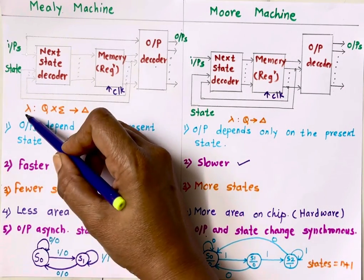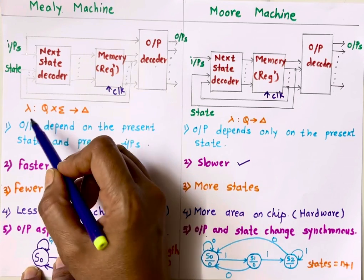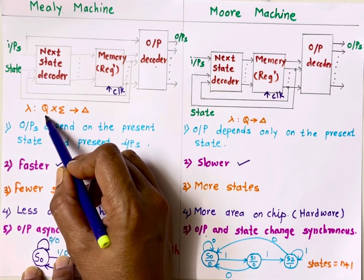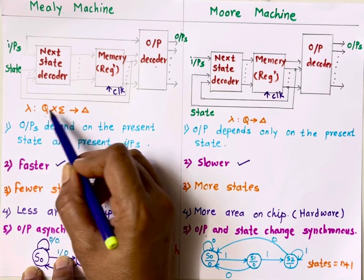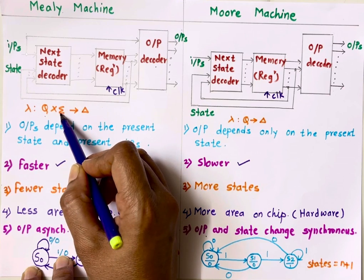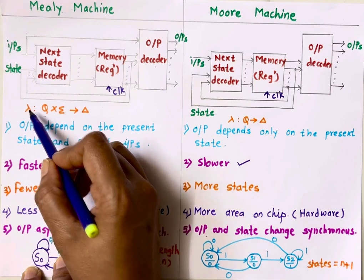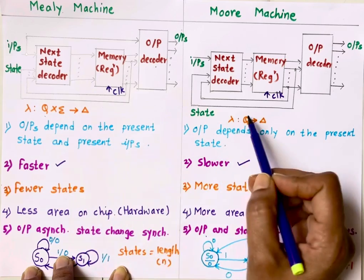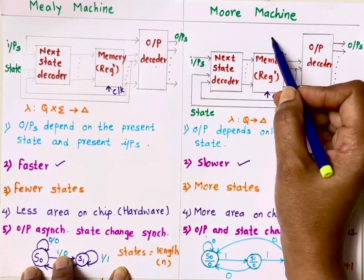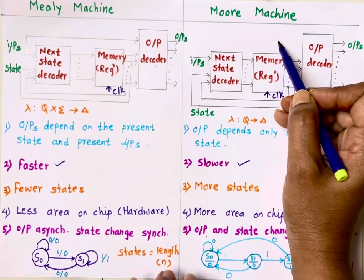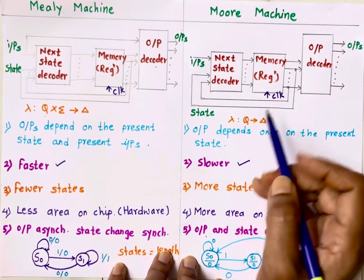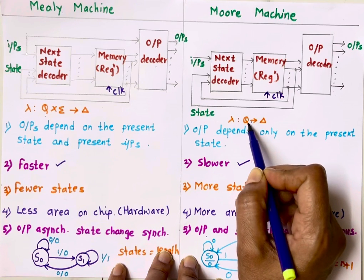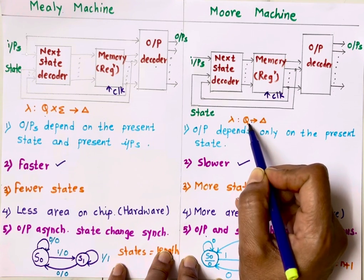Lambda is the output function. In a Mealy machine, output depends on present state Q as well as present input, so output is a function of both present state and present input. Whereas in a Moore machine, output depends on present state only.